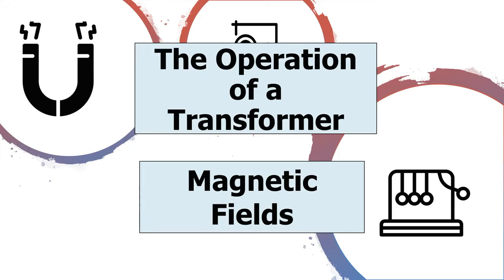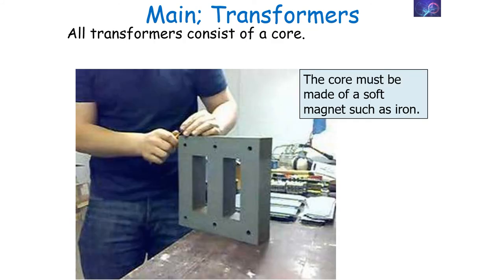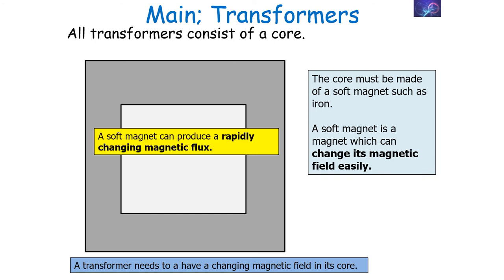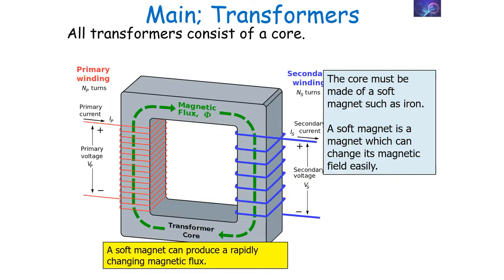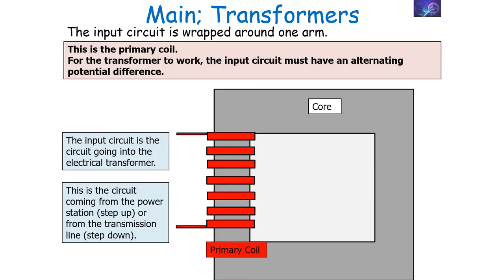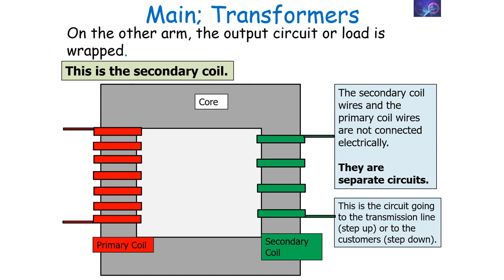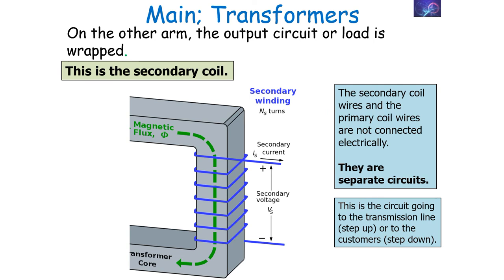Now let's look at the operation of a transformer. All transformers have a metal core in their centre made of a soft magnet such as iron. A soft magnet can change its magnetic field easily, allowing rapidly changing magnetic flux. If the magnet is not soft, energy is lost due to hysteresis. Wrapped around one arm is the primary coil — the input circuit must have an alternating potential difference. On the other arm is the secondary coil, connected to an output or load circuit. The primary and secondary coil wires are not connected electrically; they are separate circuits.